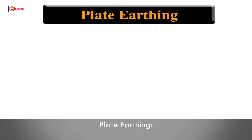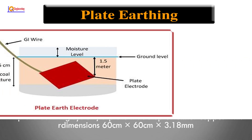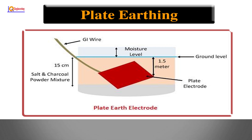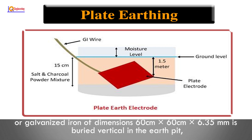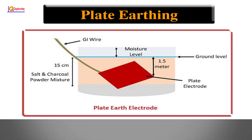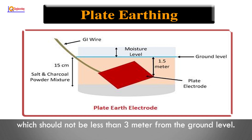Plate earthing: In the plate earthing system, a plate made up of either copper with dimensions 60 cm x 60 cm x 3.18 mm, or galvanized iron with dimensions 60 cm x 60 cm x 6.35 mm, is buried vertically in an earth pit which should not be less than 3 meters from the ground level.